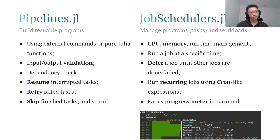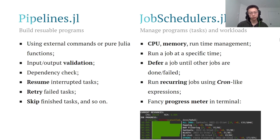The first package is Pipelines. Pipelines is used to build reusable programs — it's a wrapper of external commands or pure Julia functions. You define the input and output, you can validate them, check dependencies, and most importantly you can resume interrupted tasks, retry failed tasks, and skip finished tasks.